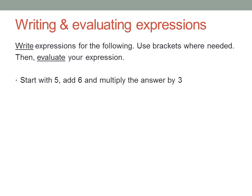Start with 5, add 6, and multiply the answer by 3. Okay, start with 5, then add 6. Now, I want to multiply by 3, but if I just write times 3, then the convention for order of operations says that the times should happen first. I want the times to happen last, so I need to put the first bit I had in brackets.